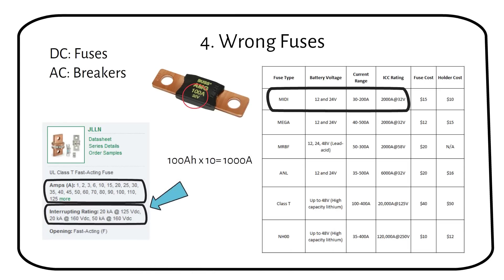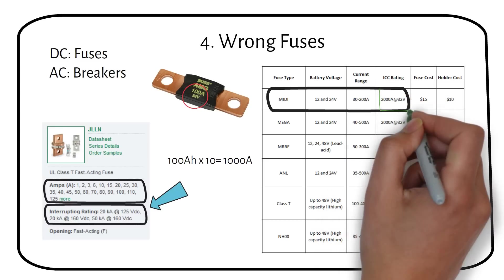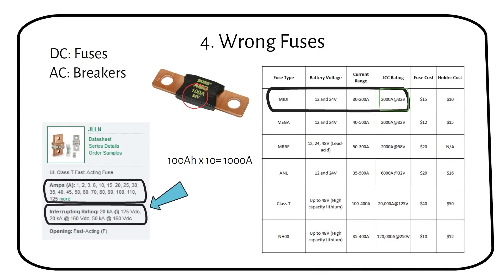If a 12 volt 100 amp hour lithium battery experiences a short circuit, it can deliver a current of 1000 amps. That's about 10 times its capacity. A midi fuse can handle this as it supports an ICC of up to 2000 amps at 32 volts.